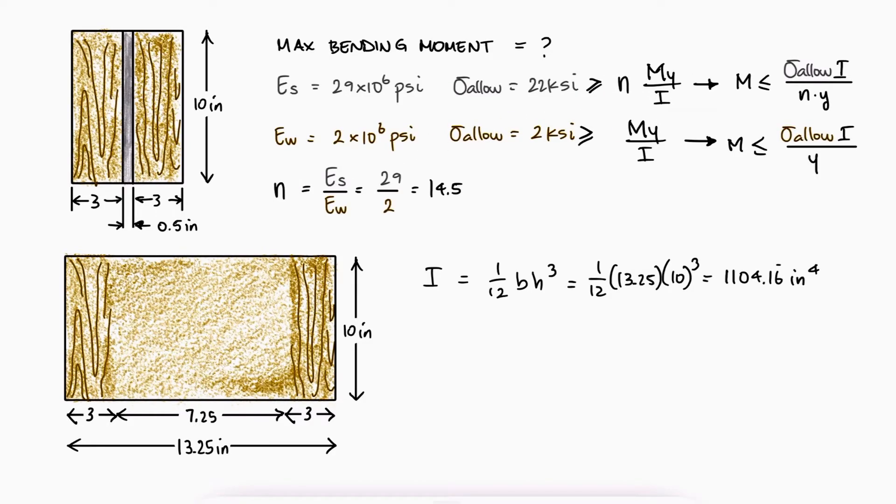Solving for the moment, we see that we need to find the largest distance from the neutral axis to where both materials end, the steel and the wood.